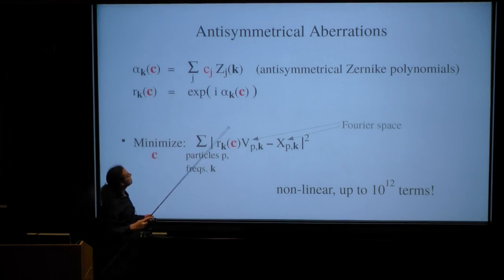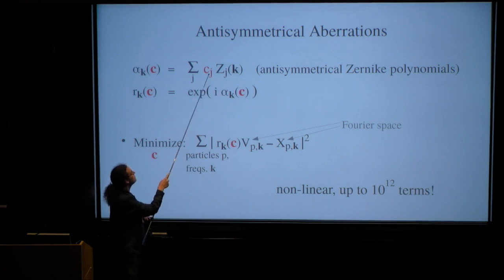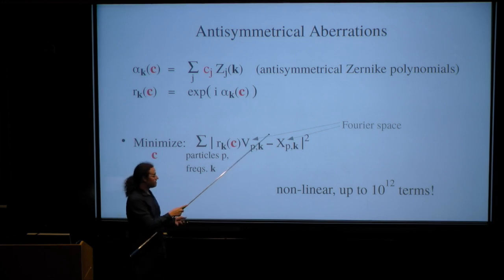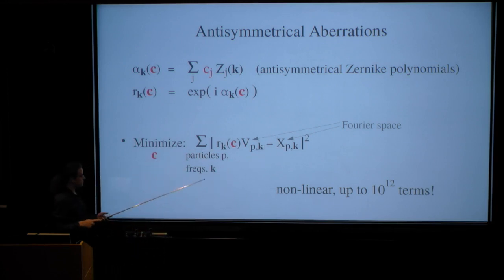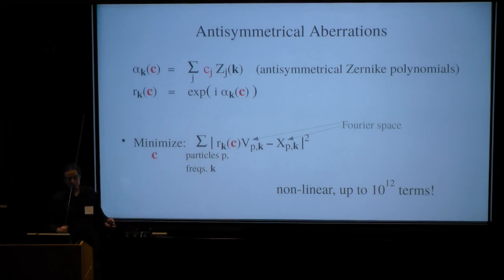For the anti-symmetrical aberrations, we would like to represent an angle field, one angle for each Fourier pixel k as a linear combination of anti-symmetrical Zernike polynomials. And these are the unknowns, these red letters. And then these phase angles produce phase shifts, numbers on the unit circle in the complex plane, that when multiplied to the predicted images, rotate them as closely as possible in the least square sense to the complex amplitudes in the observed images. And this is to be minimized over all particles and all frequencies. Now the problem with this is that it's nonlinear and we would like to always have millions of particles if possible with hundreds of thousands of pixels each.